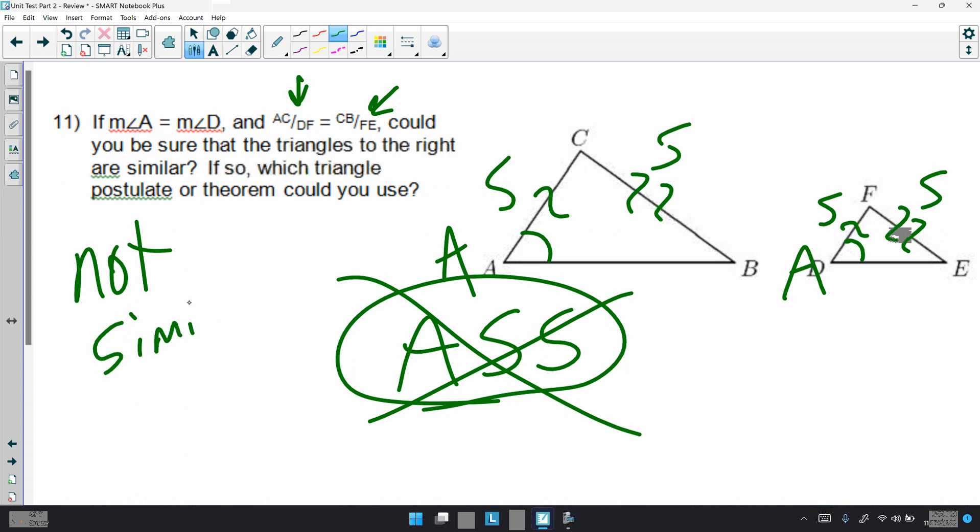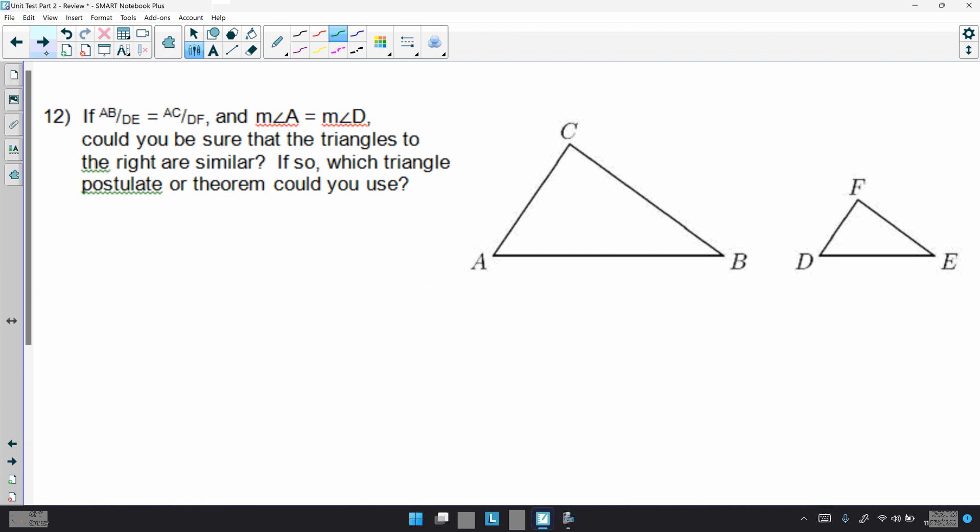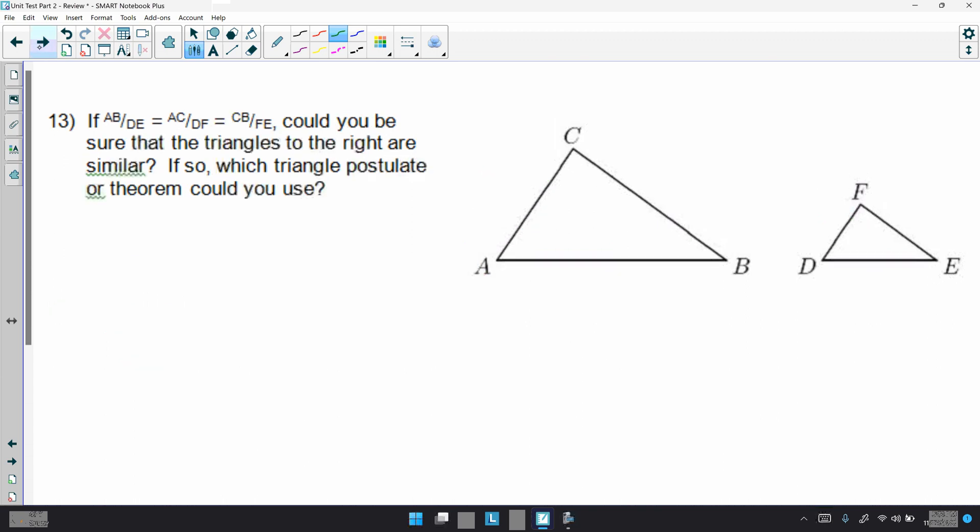Number 12, if AB is proportional to DE, again, squiggly worms, AC proportional to DF. And, the measure of A is congruent to the measure of angle D. Well, again, it spells it out. Looks like it's going to be SAS. And, that is, indeed, one of our postulates for similarity. 13, same thing. AB and DE are proportional. AC and DF are proportional. CB and FE are proportional. All the way around. Side, side, side. Or, I think, as some students say, SSS.